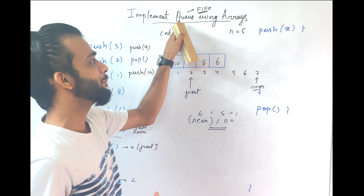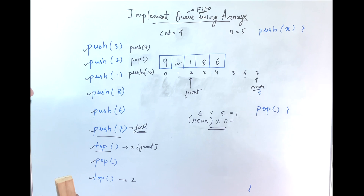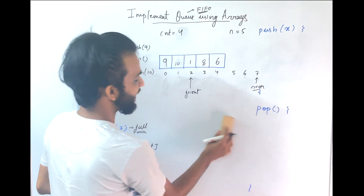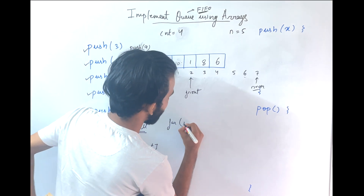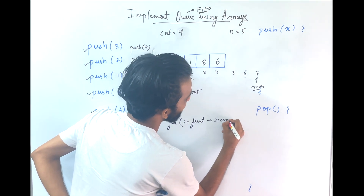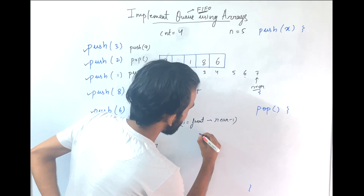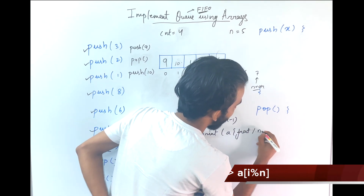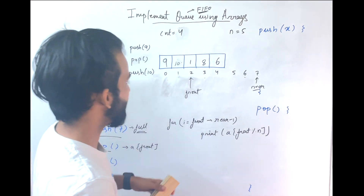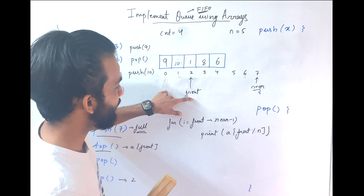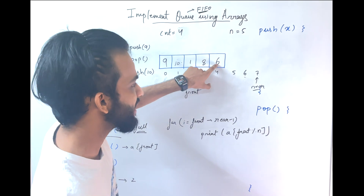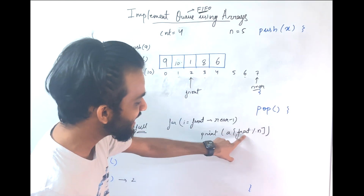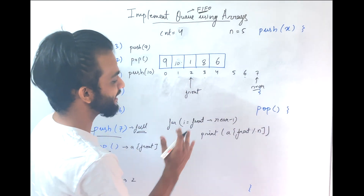That is how we implement queue using arrays. To print all elements, iterate from front to rear minus 1 and print a[i modulo n]. For example: at index 5 modulo 5, the correct element gets printed; at 6 modulo 5, the next element prints. This correctly handles the circular wrapping.